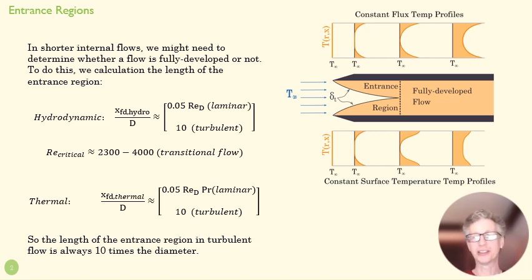Turbulent flow is much more consistent. It is just based on the diameter of our internal flow. And so you can see here this X, that's the entrance length region. And so if X over D is equal to 10, then X is equal to 10D. And that means that in turbulent flow, your entrance region is always 10 times the diameter of your flow.